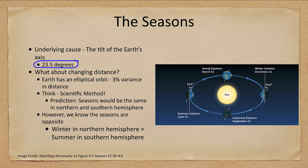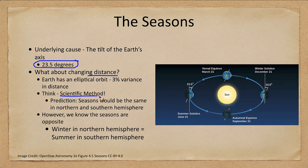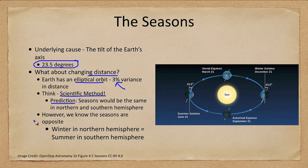Often people will think that the changing distance between Earth and Sun causes seasons. We've already looked at how there are times when Earth is closer to the Sun and further away. You might expect that things would be warmer when we're closer to the Sun. However, if this is the case — because the Earth does have an elliptical orbit and varies by about 3% in distance — it makes a prediction that the seasons would be the same in the northern and southern hemisphere. But we know that when it is winter in the northern hemisphere, it is summer in the southern hemisphere. So the seasons are opposite.